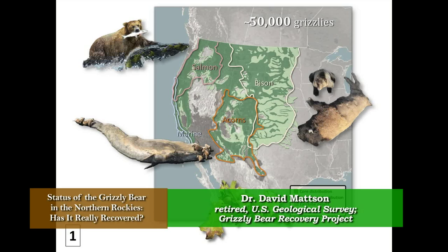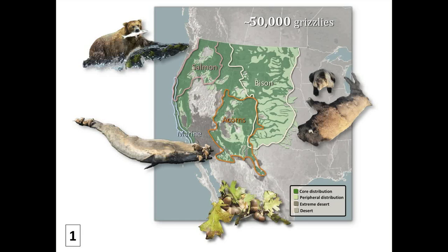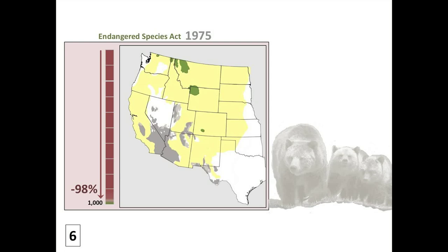At one time we had lots of grizzlies in lots of places. We killed them off very quickly. The gains have been small since then, and the threats remain severe. But the good news is there is ample potential. Grizzly bears were afforded Endangered Species Act protections in 1975 — at that point we had about the same number of bears as in 1960, roughly 1,000 bears, still down 98%.